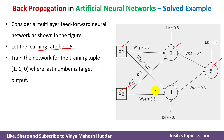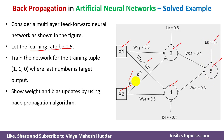We have been given the initial weights: w13 = 0.5, w14 = 0.6, w23 = -0.3, and so on. The biases are: b3 = 0.6 with respect to neuron 3, b4 = -0.4 with respect to neuron 4, and b5 = 0.8 with respect to neuron 5. We need to update weights and biases using the backpropagation algorithm.